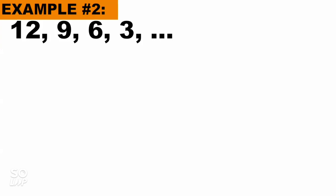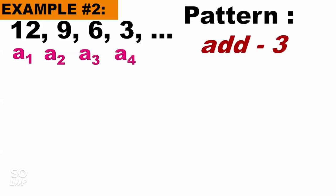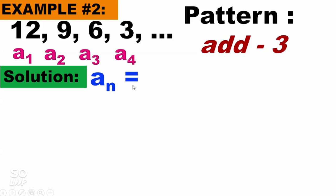Example number 2. The pattern is we add negative 3: 12 plus negative 3 is 9; 9 plus negative 3 equals 6; 6 plus negative 3 equals 3. The pattern is we add negative 3. For the solution, we write a sub n equals negative 3n — we start with that.